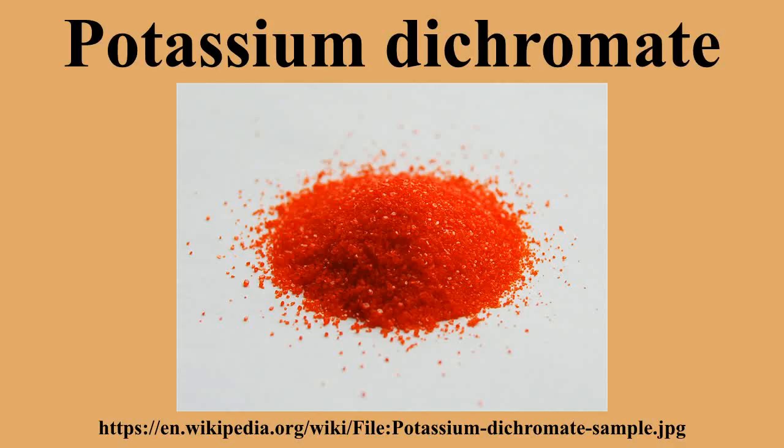Sulfur dioxide tests: potassium dichromate paper can be used to test for sulfur dioxide, as it turns distinctively from orange to green. This is typical of all redox reactions where hexavalent chromium is reduced to trivalent chromium. Therefore, it is not a conclusive test for sulfur dioxide. The final product formed is Cr₂O₃.